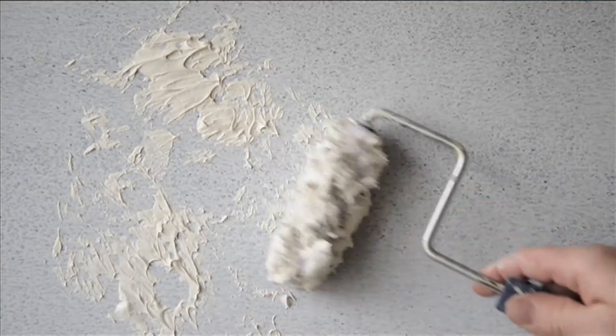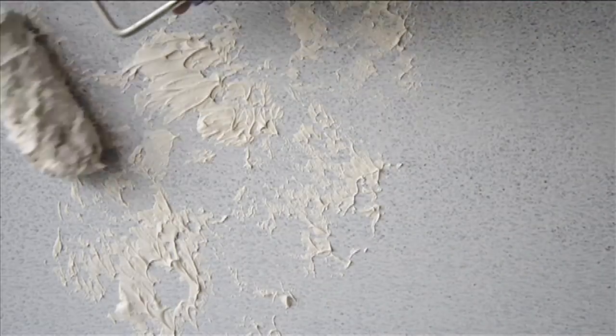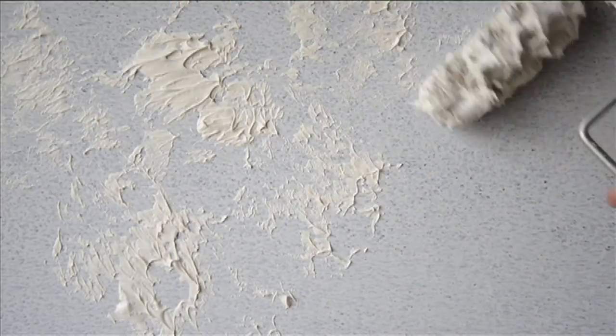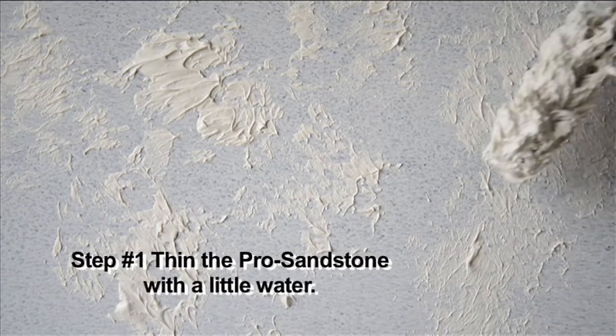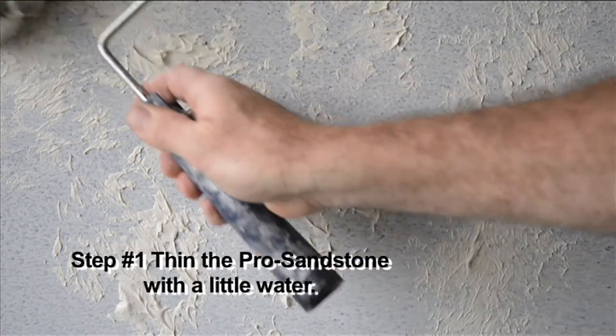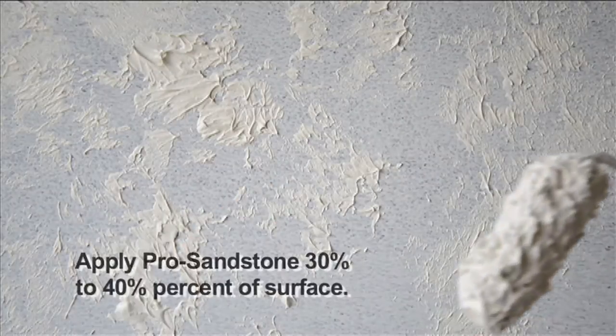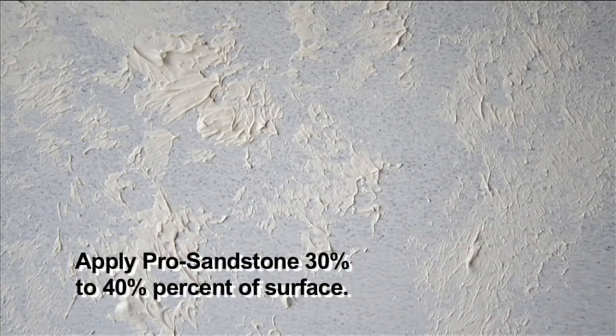In Pro Sandstone Fresco, we're working over a primed surface. We're taking the Pro Sandstone spatula, thinning it with just a little bit of water to make it more rollable, and applying it to about 30 to 40% of the surface.